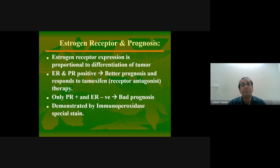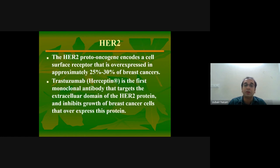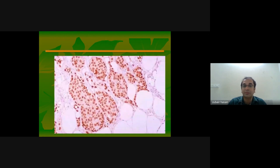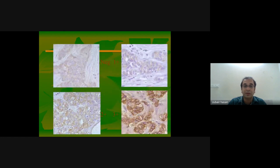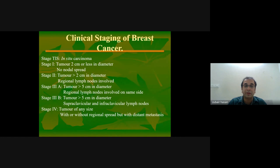Regarding ER/PR and HER2 status — whenever you diagnose a cancer of the breast you must perform immunohistochemistry markers. ER receptor positivity is assessed by nuclear staining using the Allred scoring system. HER2 is assessed by membrane positivity — a characteristic chocolate-brown membrane staining pattern.